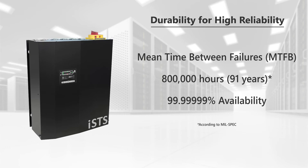Engineered for the highest reliability and power availability, the Model W has a mean time between failures of 800,000 hours, which is equal to 91 years.